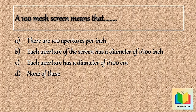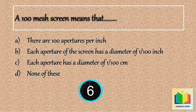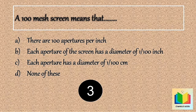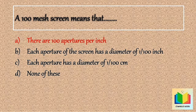Your time starts now. 10, 9, 8, 7, 6, 5, 4, 3, 2, 1. Stop. The answer is Option A: There are 100 apertures per inch.